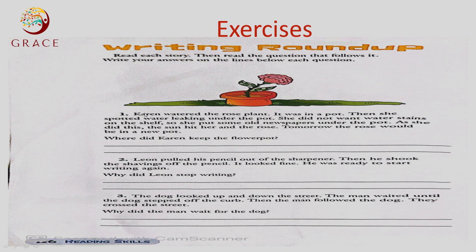The last time to read and explain. Karen watered the rose plant. It was in a pot. Then she spotted water leaking under the pot. She did not want water stains on the shelf, so she put some old newspapers under the pot. As she did this, the sun hit her and the rose. Tomorrow the rose would be in a new pot.